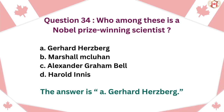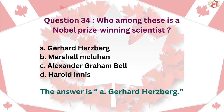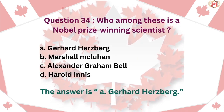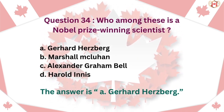Question 34: Who among these is a Nobel Prize-winning scientist? A. Gerhard Herzberg, B. Marshall McLuhan, C. Alexander Graham Bell, D. Harold Innis. The answer is A. Gerhard Herzberg.